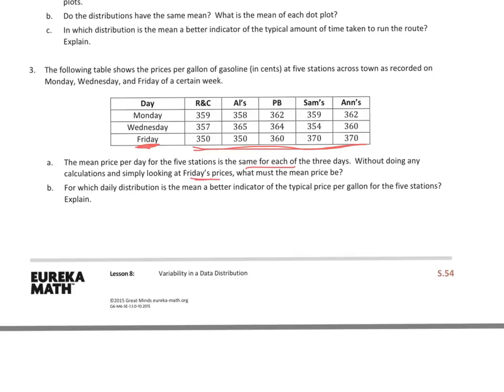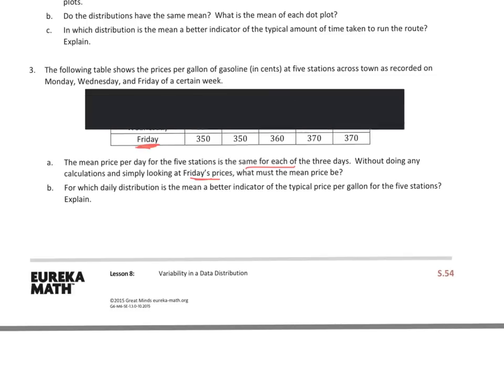Without doing any calculation and simply looking at Friday's prices, so I'm looking just at Friday's prices, these bottom ones right here. What must the mean price be? So when I look at those, just those bottom ones, what I'm going to do quick is I'm going to block off all the other ones because I only want to look at these. So I want to figure out the mean just by looking at these to see what the mean is. Well, I see that I have 370. If I take 10 away from that and give it to the 350, I'll be left with 360 here. I already have 360 here. And 370 goes to 360 because I took 10 away. Well, I know that I can do the same exact thing. Take 10 away from the 370 here, give it to the 350, and I get 360, and there's my mean. The mean price must be 360 cents.